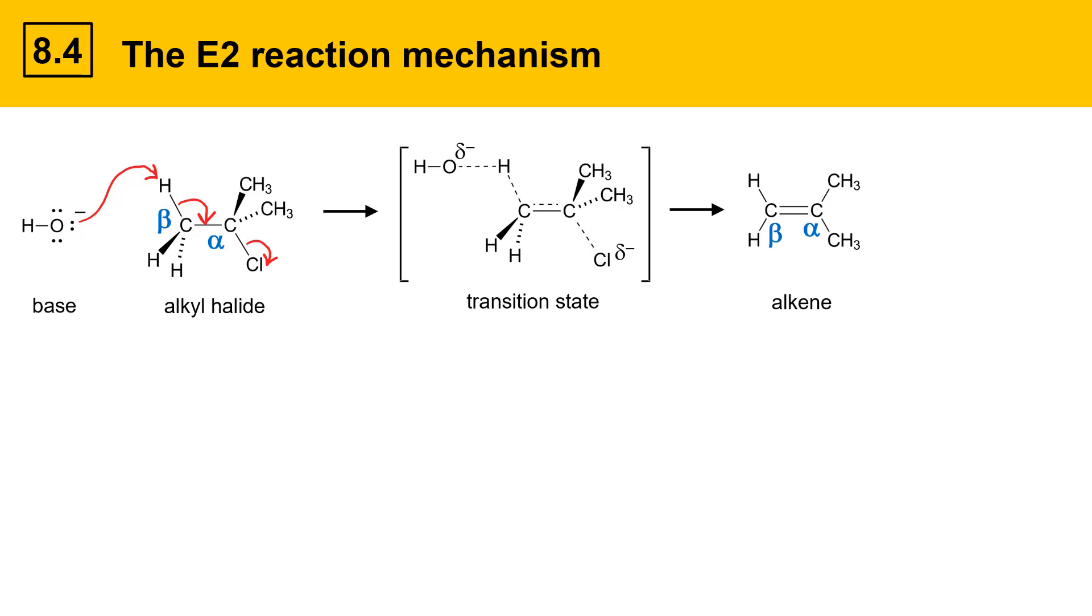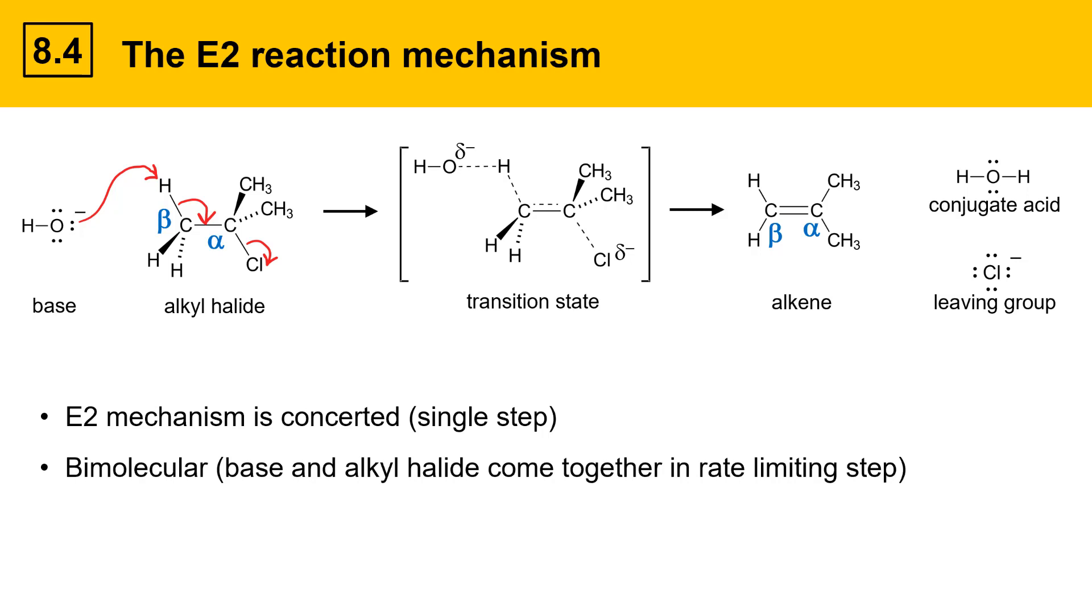The products are an alkene that has a double bond between the alpha position and the beta position, and there's also a conjugate acid and the leaving group. The E2 mechanism is concerted, meaning it all happens in a single step. It's also bimolecular, which means the base and the alkyl halide come together in the rate-limiting step.